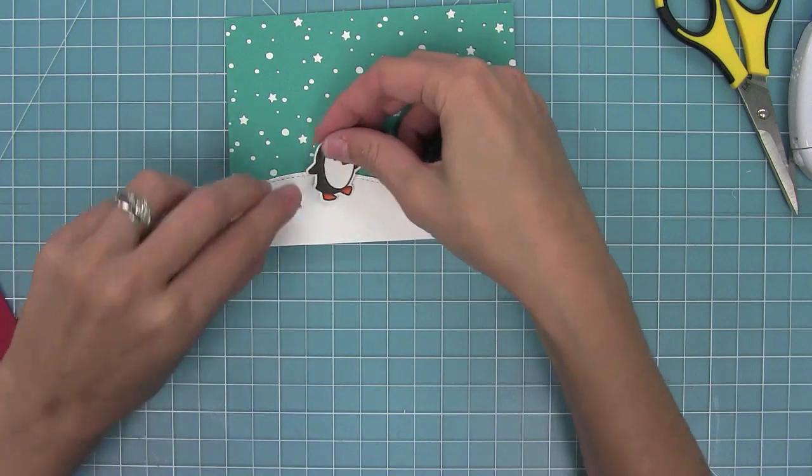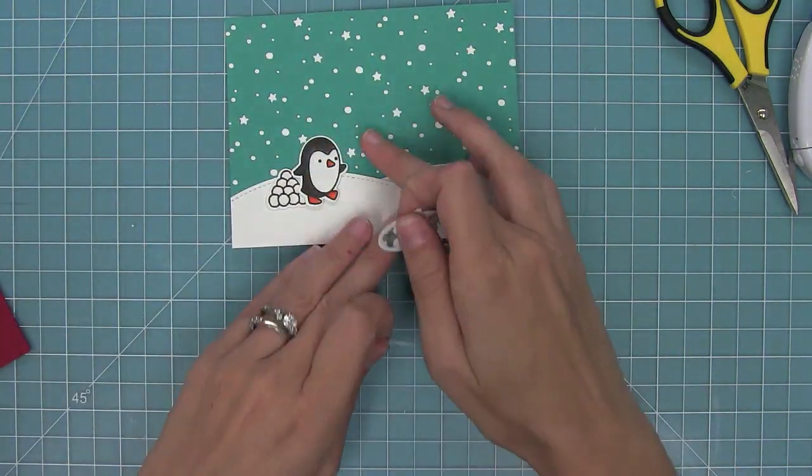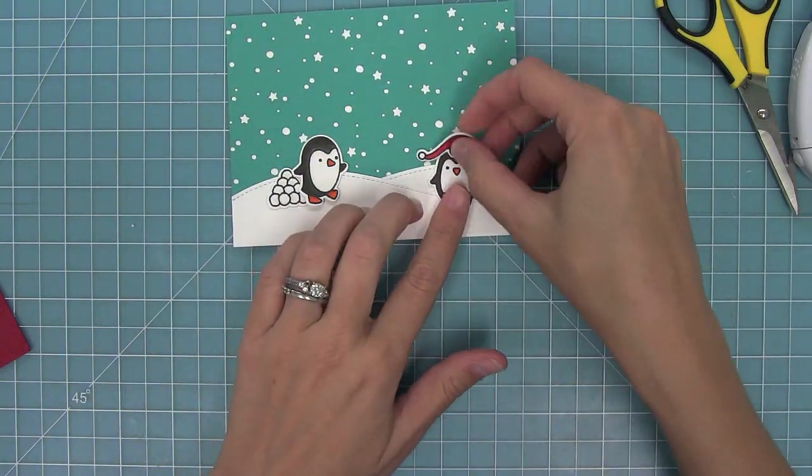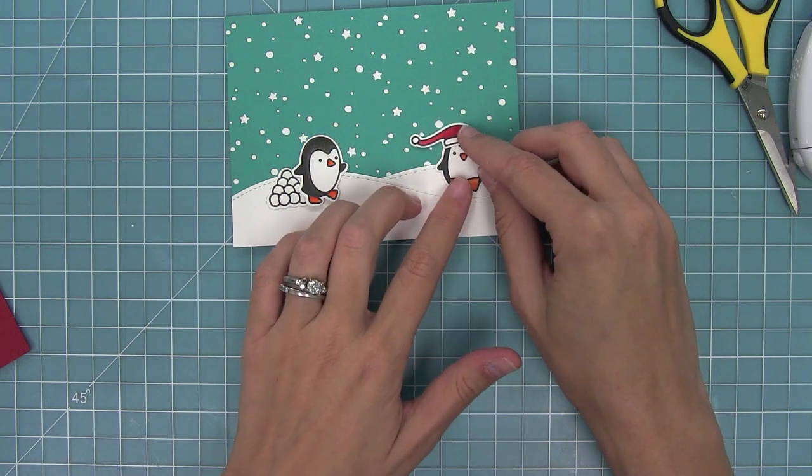Now I'm going to use some pieces from Toboggan Together. I had colored these previously and I will link to the Toboggan Together video where I colored these. I had them all ready to go for a card, so I love having stuff pre-colored so I'm ready to make cards whenever I have a little bit of time.